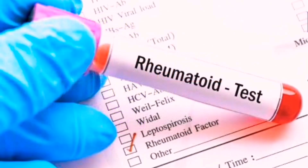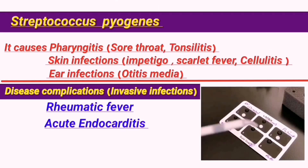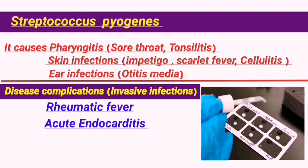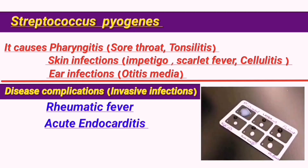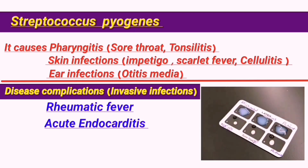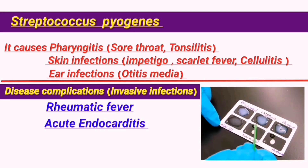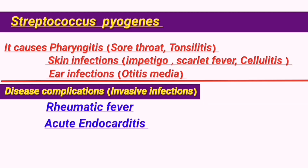Rheumatic fever can be confirmed through the rheumatic fever or RF test in combination with an antistreptolysin O titer test, or ASOT. If both are positive, it means that there is a streptococcal infection causing the inflammation which led to the rheumatic fever.